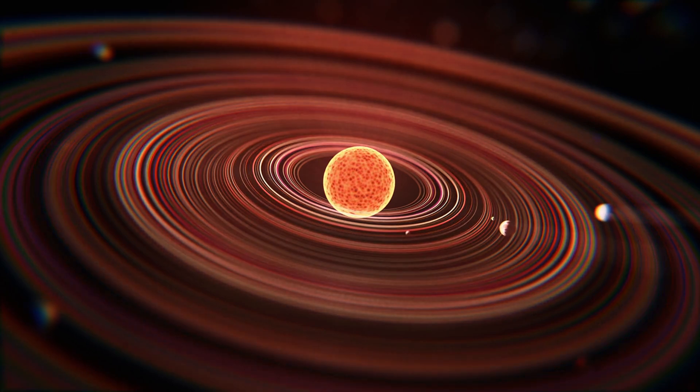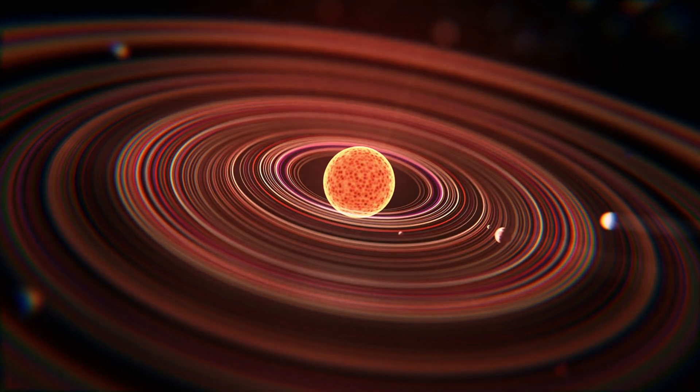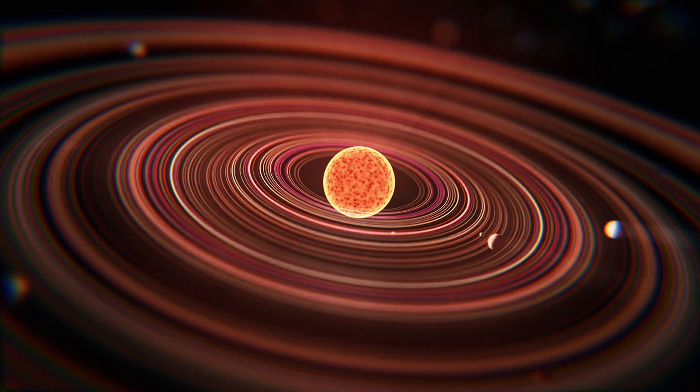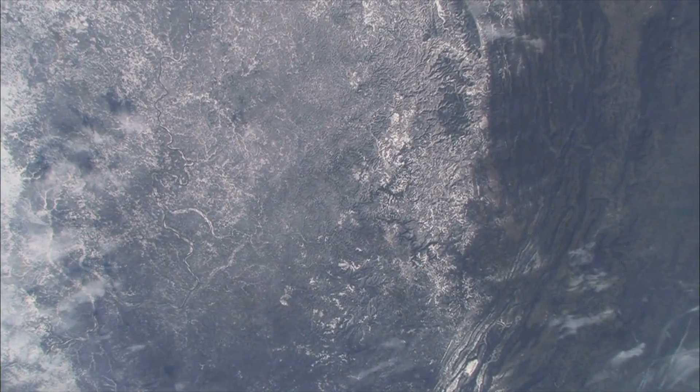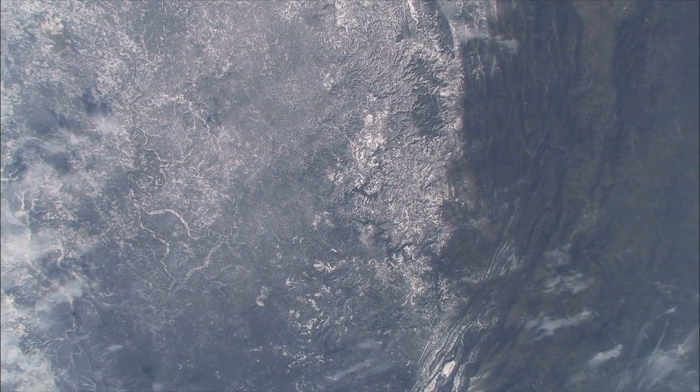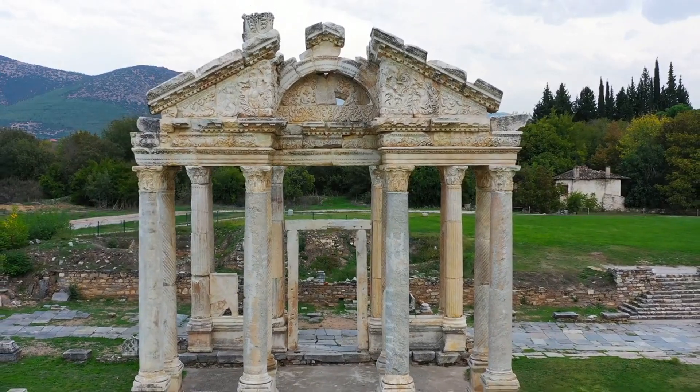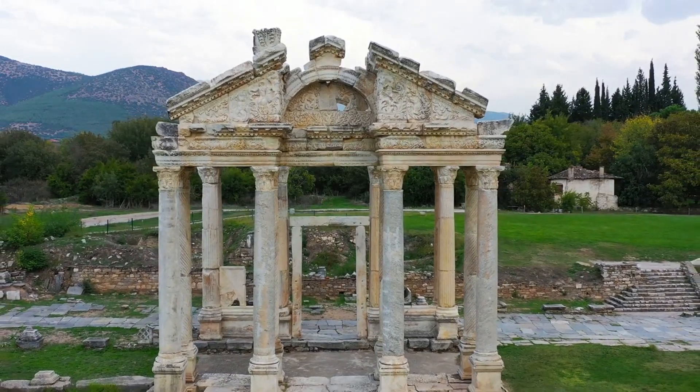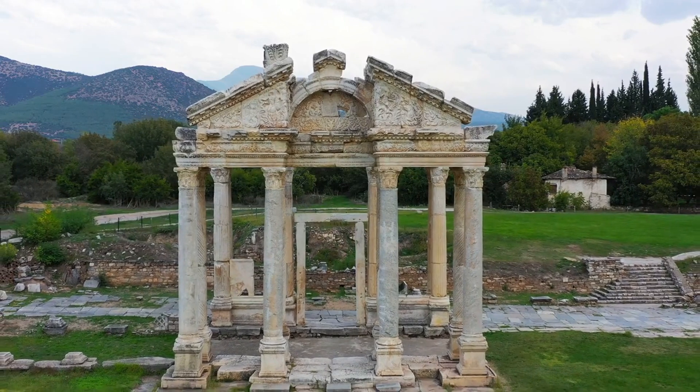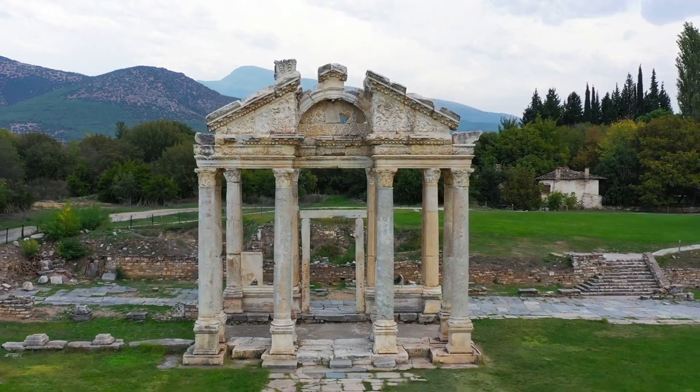Every pixel of data holds a clue, a puzzle piece in the larger picture of our solar system's history. But that's not all. Radar observations will provide a three-dimensional map of Apophis' surface, revealing its topography with stunning detail. Imagine tracing the contours of ancient craters and rugged ridges, each scar a testament to the asteroid's tumultuous journey through space.